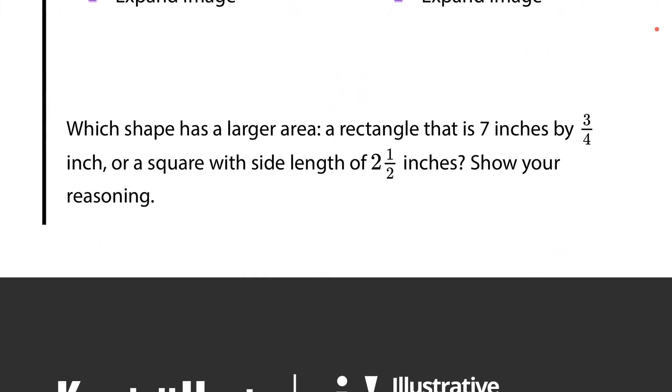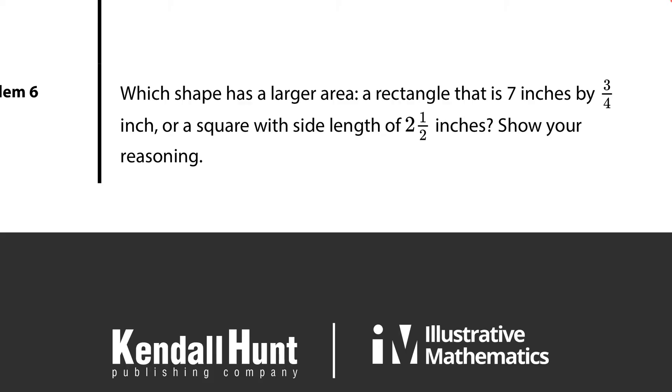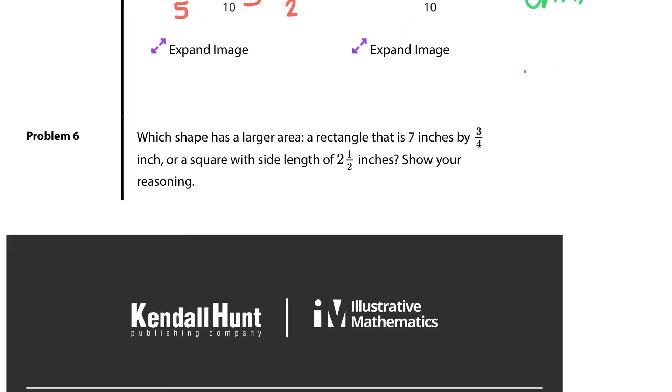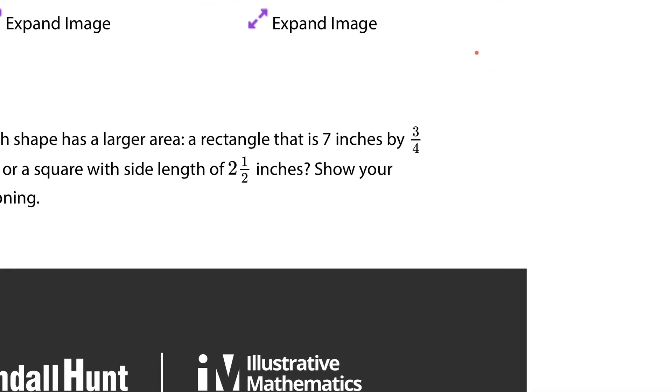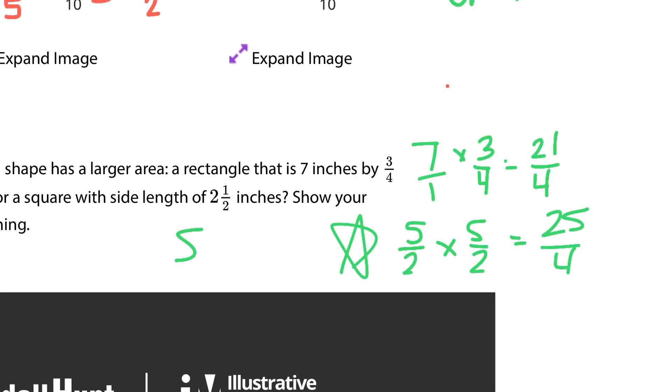Question 6. Last question for this lesson. Which shape has a larger area? A rectangle at 7 by 3/4 inch or a square with a side length of 2 1/2 inches? Show your reasoning. Well, if we take 7 and multiply by a length of 3/4 here you would get 21/4. For the square, if you did 5 halves times 5 halves you would get 25/4 for that area. So, which is larger? The square.